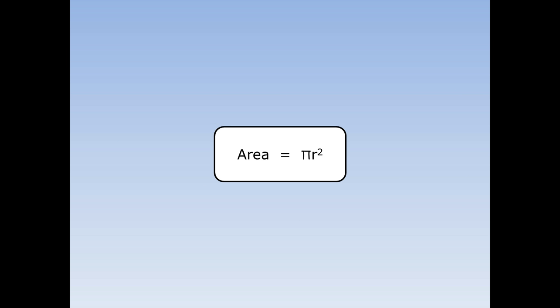The area of a circle is pi r squared, where pi is equal to 3.14 and r squared means the radius times the radius.